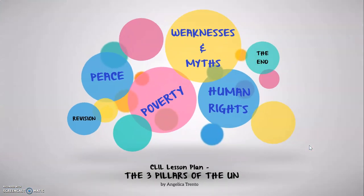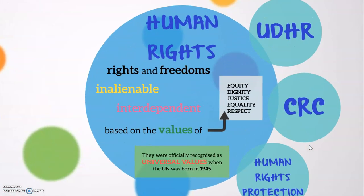Pillar number two: the United Nations protecting human rights. What are human rights? Human rights are the rights and freedoms to which every human being is entitled, regardless of any distinction. They have existed for hundreds of years in different societies all over the world. They are inalienable, which means that they cannot be taken away or given away by the possessor. They can only be limited through appropriate judicial processes — for example, when a person goes to prison, their freedoms are limited.